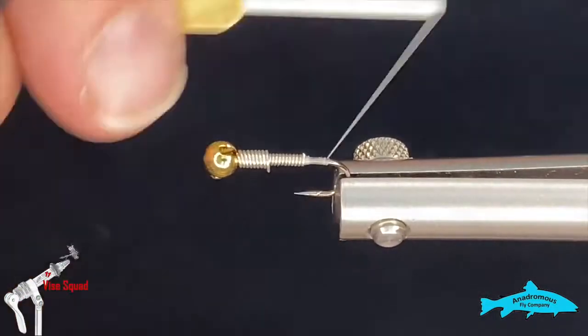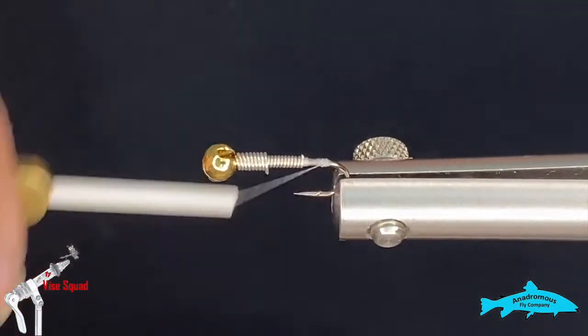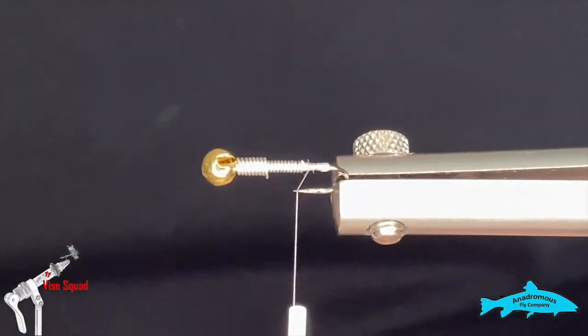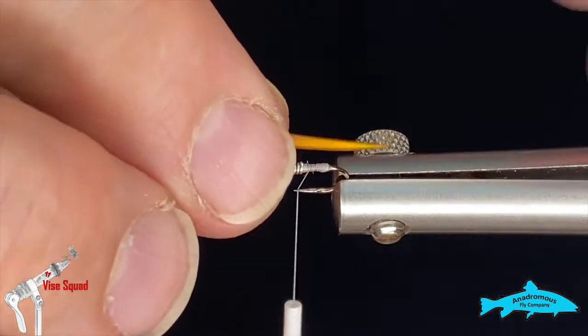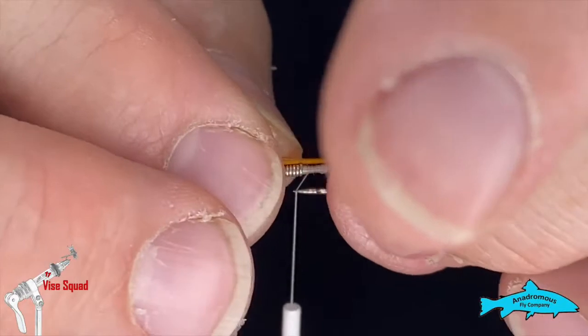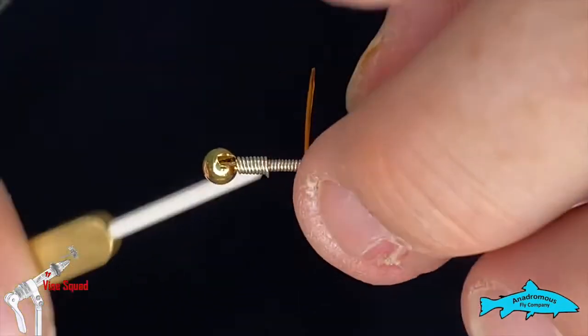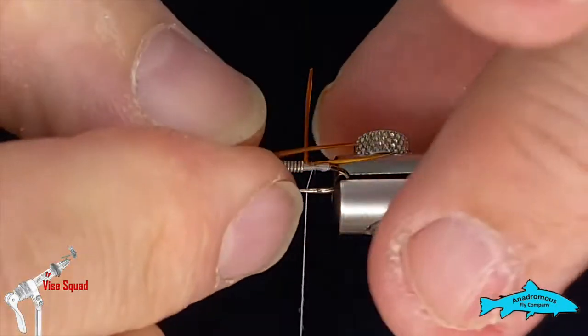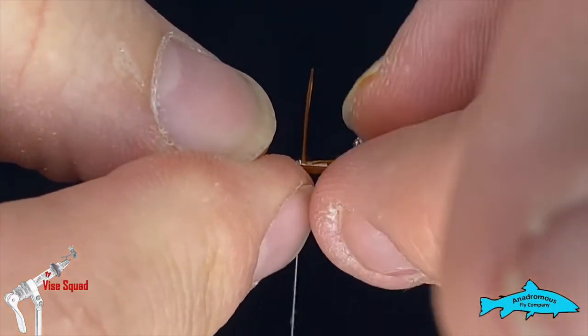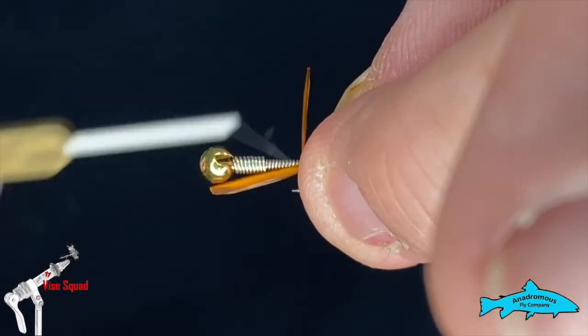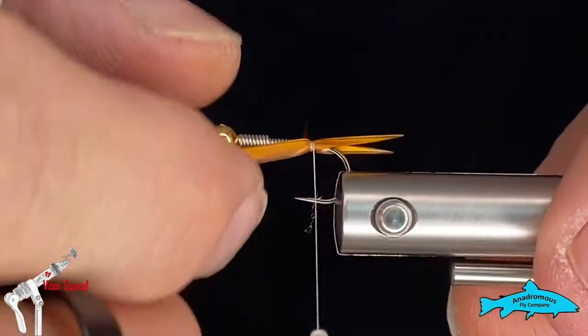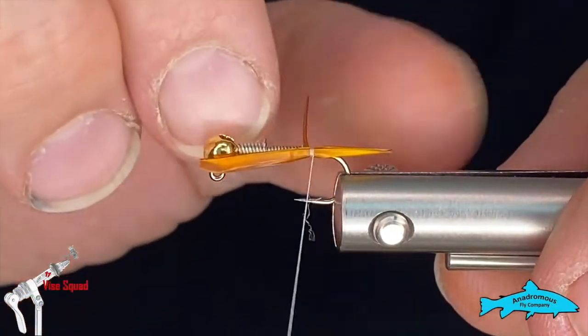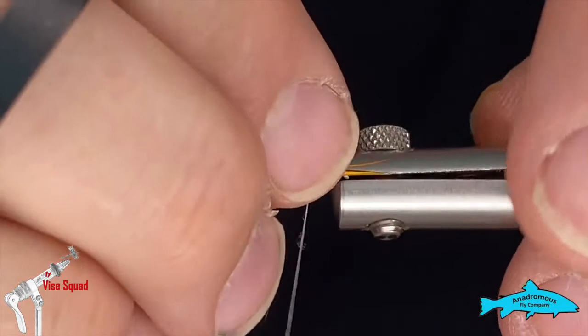Now what we'll do is we'll run it down to the bend and we'll just put a few wraps in there just to make a little ball and that'll help the biots splay out a little bit, which we'll grab now. These are some amber colored biots. I'll try and get that tied in right along the side of the hook. You don't want them sticking out too far at the back end - maybe a little less than the hook gap would probably be a good way to measure that. We'll get the other one on there and we'll make sure that they're even.